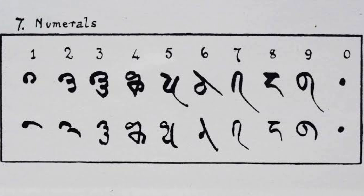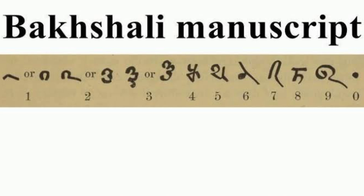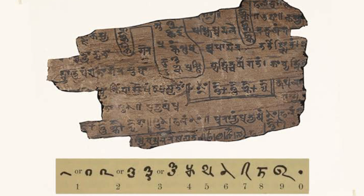The manuscript is a compilation of mathematical rules and examples and prose commentaries on these verses. Typically, a rule is given with one or more examples, where each example is followed by a statement of the example's numerical information in tabular form, then a computation that works out the example by following the rule step by step while quoting it, and finally a verification to confirm that the solution satisfies the problem.